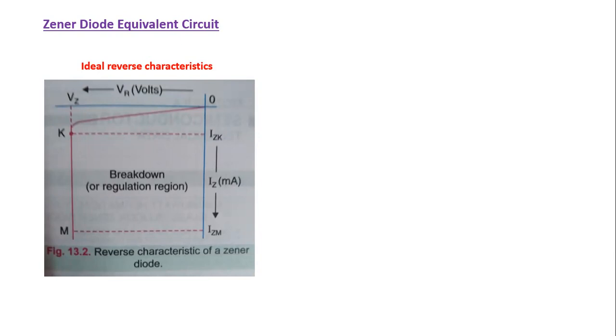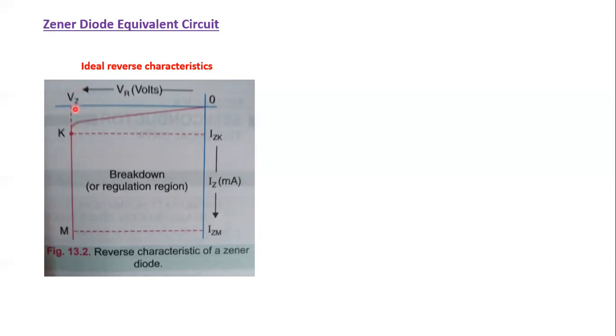Shown here is a typical reverse characteristic of a Zener diode, which I think you learned in the previous session. The reverse characteristic is the plot between reverse voltage and current. If you plot voltage and current, the graph looks like this — this is the ideal Zener reverse characteristic. At a particular voltage, the current increases very sharply, meaning the voltage doesn't vary with the change in current.